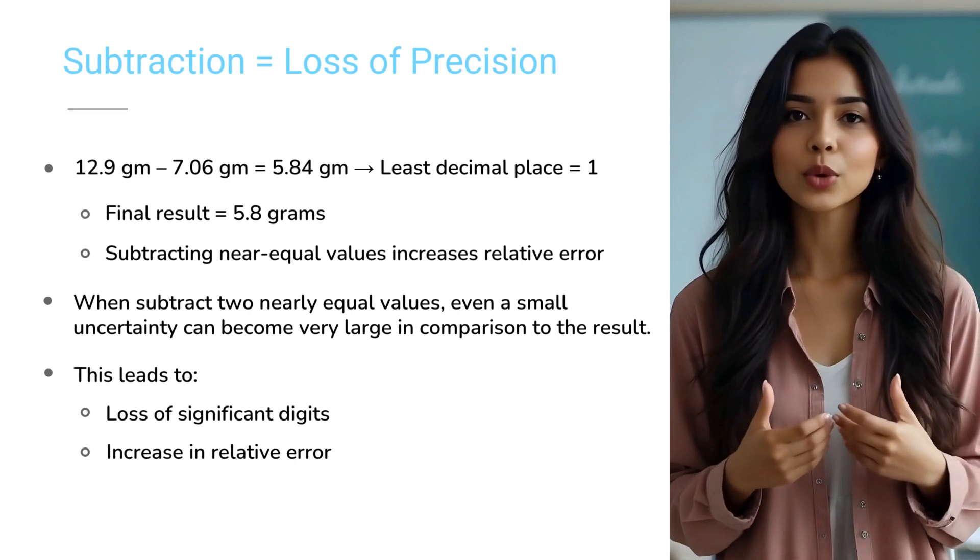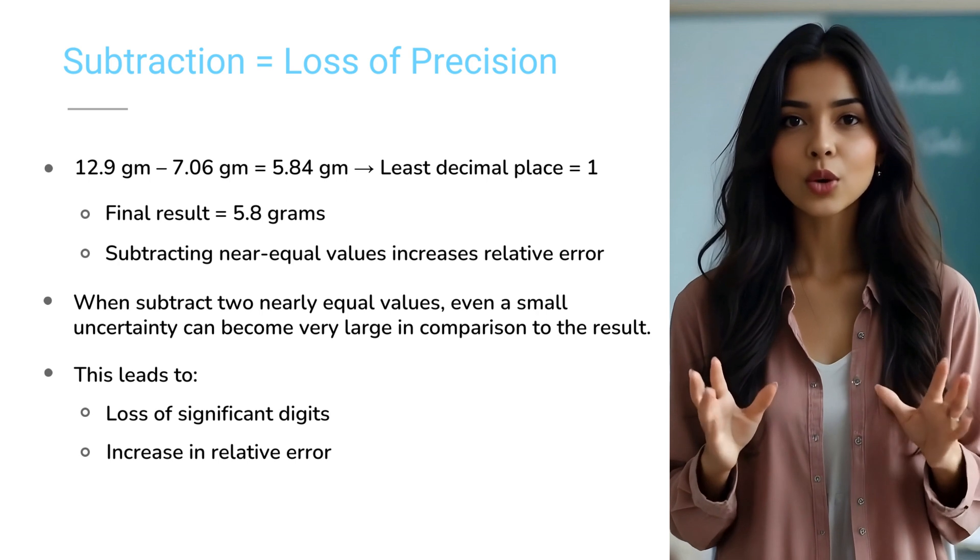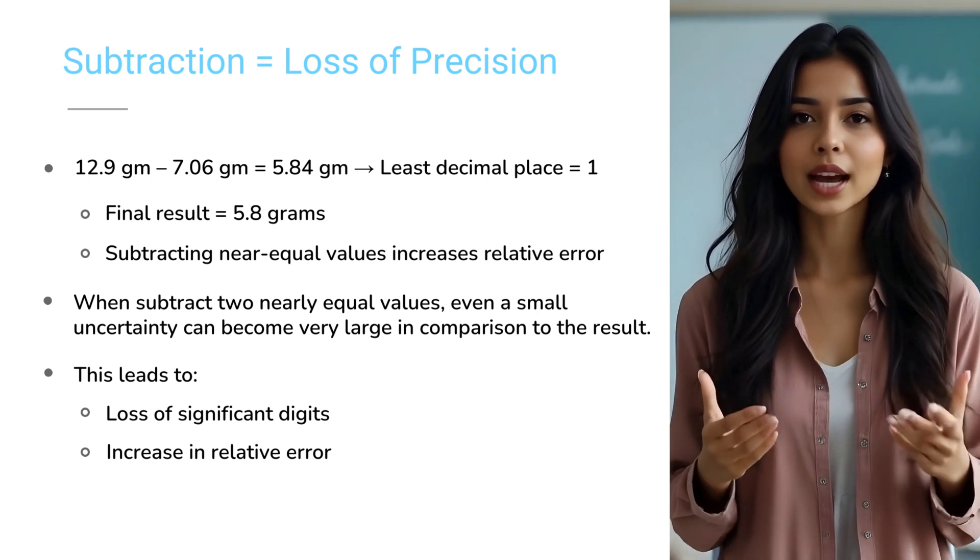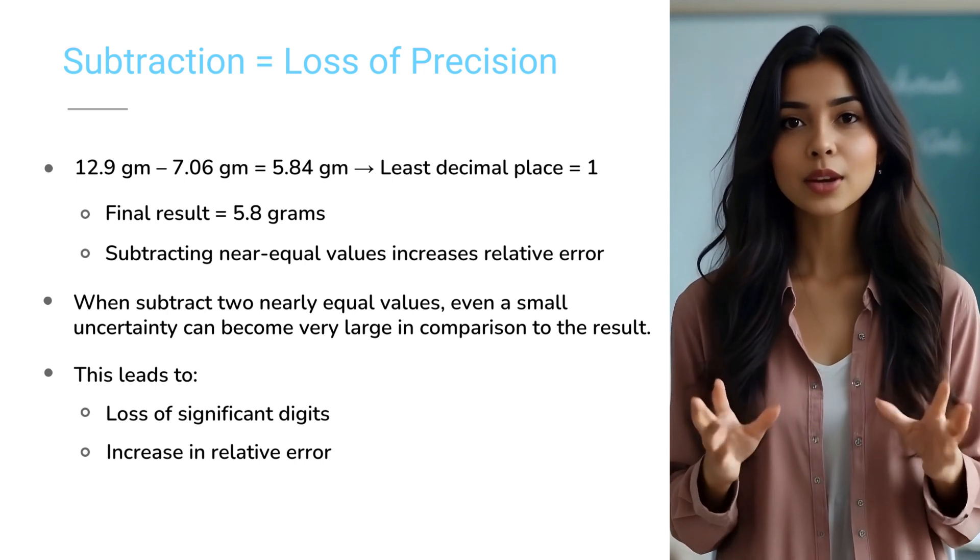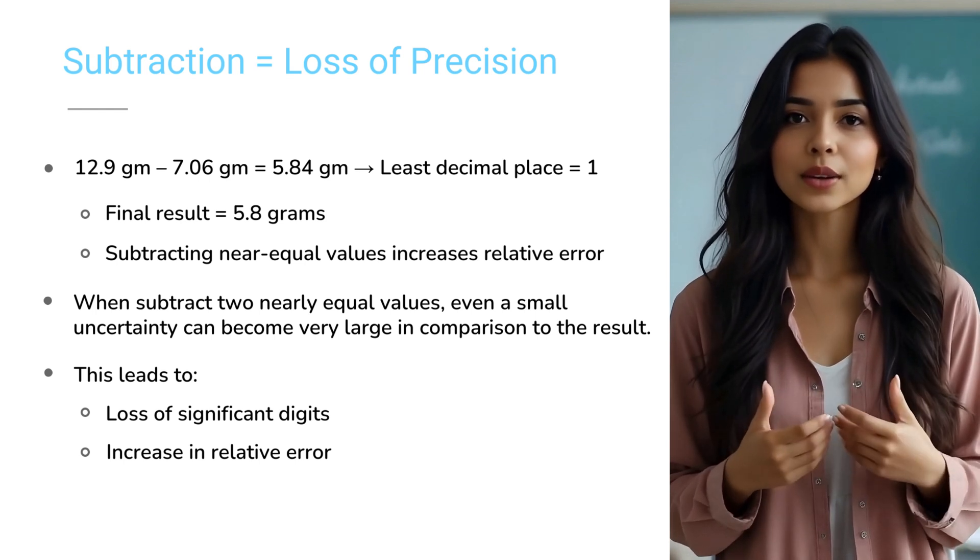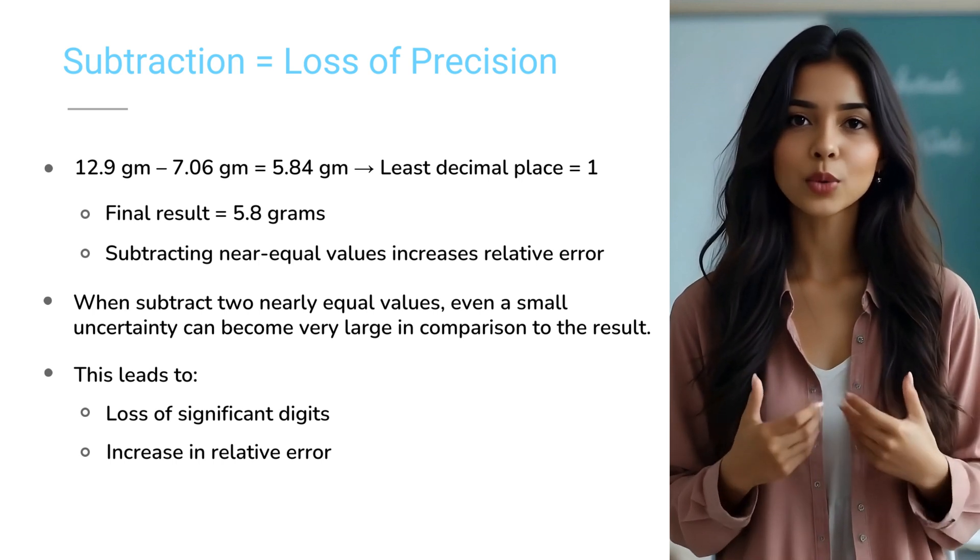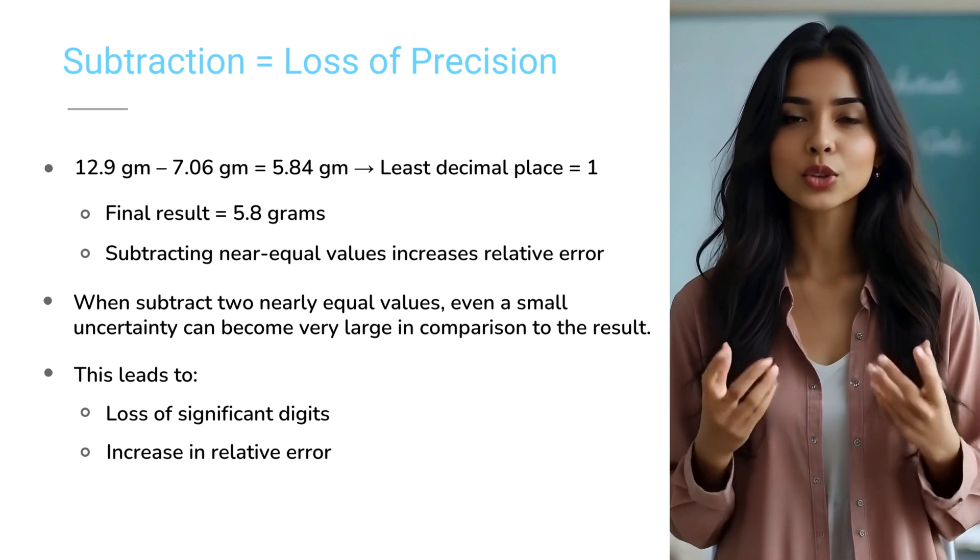Let's talk about something surprisingly tricky: subtraction and significant figures. Did you know? Subtraction can reduce significant figures unexpectedly and increase your uncertainty. Example: 12.9 grams minus 7.06 grams equals to 5.84 grams, in which 12.9 grams is accurate to one decimal place, and 7.06 grams is accurate to two decimal places.